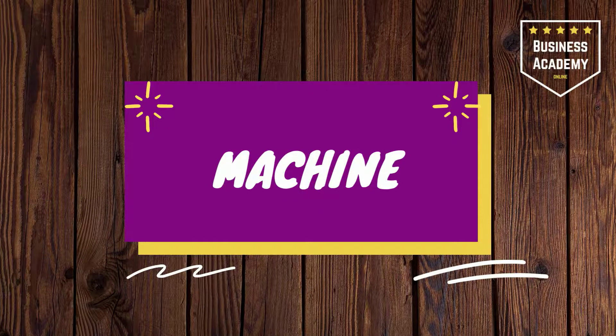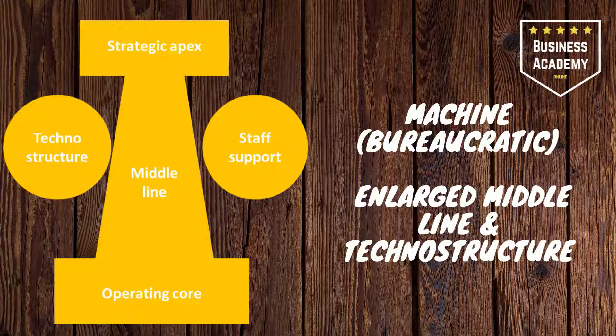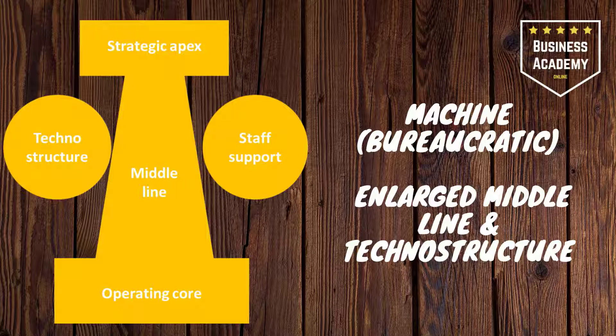Machine. A machine or bureaucratic structure has an enlarged middle line. It has all of these factors, but a massive amount of middle management and a bigger techno structure as well because it needs that IT. This is typical of the public sector or large bureaucracies. They still have that Strategic Apex and Operating Core, but also a large amount of middle management to manage all of the rules, processes, and the cogs in the wheel — that's why it's referred to as Machine.